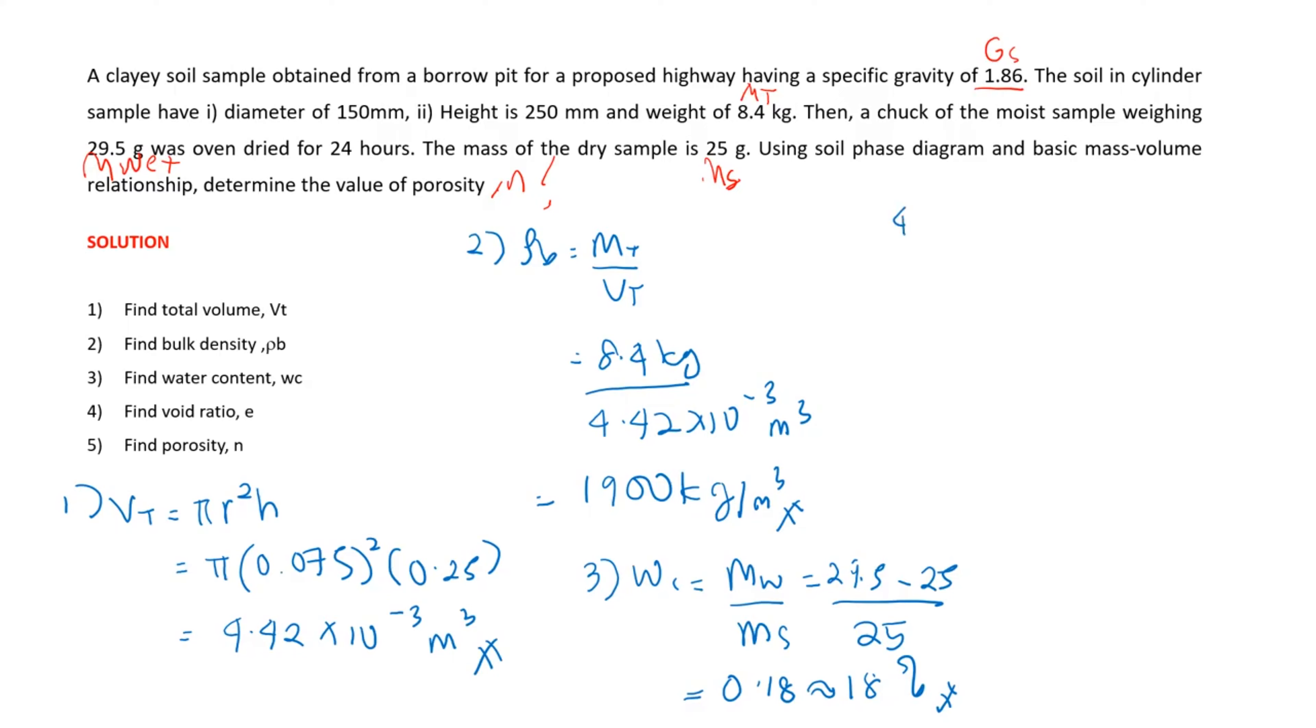Step number four is to calculate the void ratio. To calculate the void ratio, you can use the equation from bulk density and rearrange it. It would be Gs × ρw × (1 + w) / ρb minus 1. Remember, density of water is 1000 kg per cubic meter.